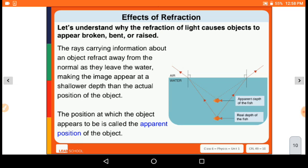Let us understand why the refraction of light causes the objects to appear broken, bent, or raised. The rays carrying information about an object refract away from the normal as they leave the water, making the image appear at a shallower depth than the actual position of the object. So let us say that it is an apparent position.